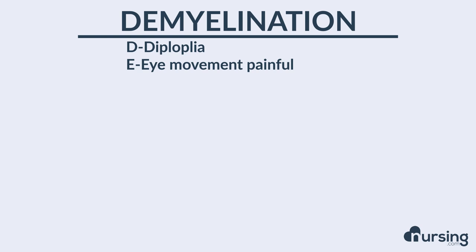The first D in DEMYELINATION stands for diplopia — double vision. E stands for eye movement, and that eye movement can actually be painful in patients with multiple sclerosis.